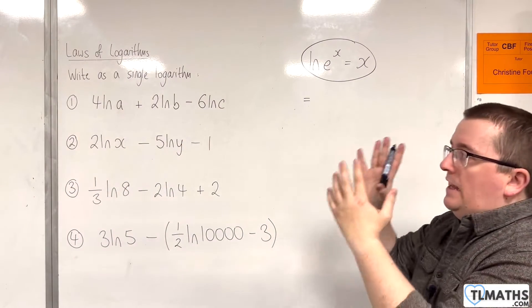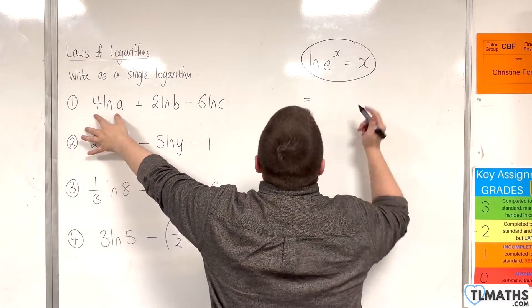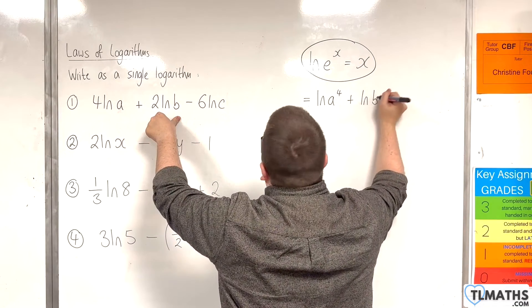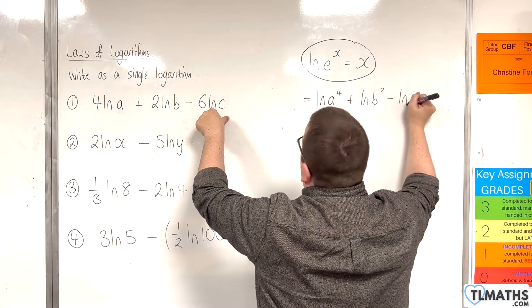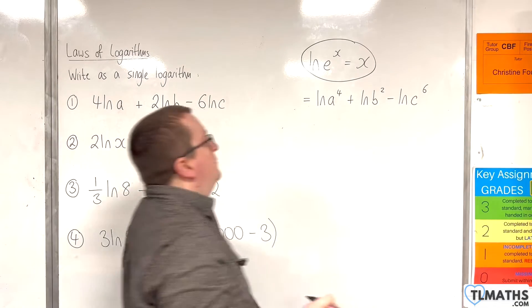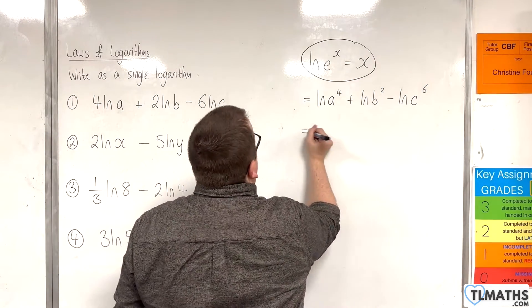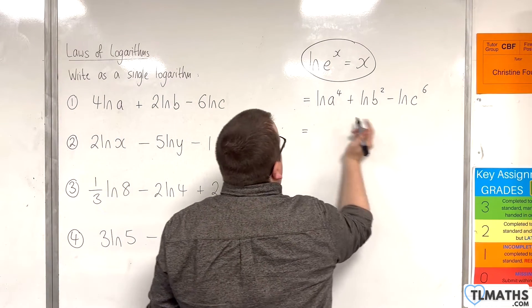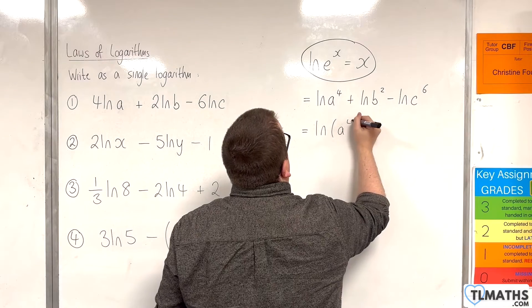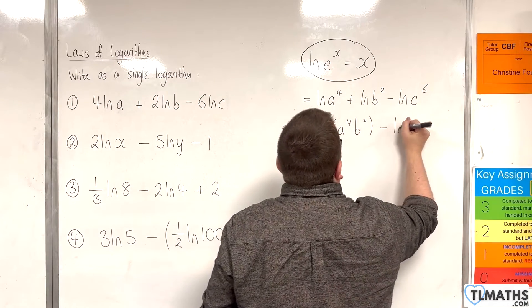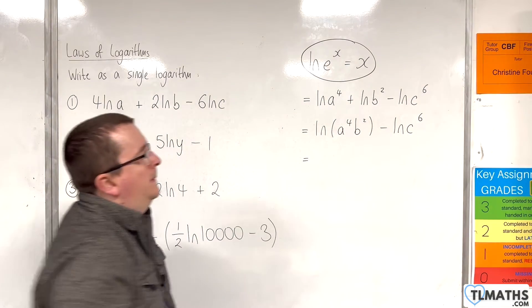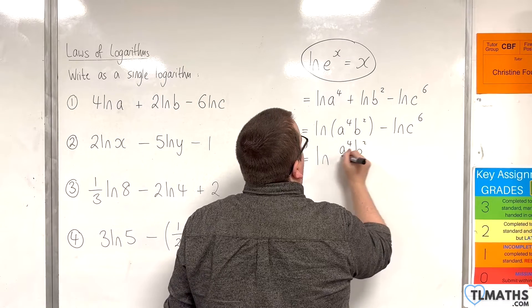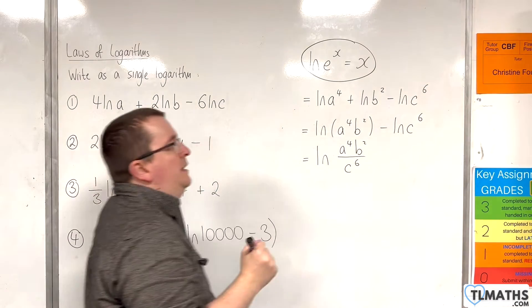The first thing you want to do is use the power rule, so we write this as the natural log of a to the 4, plus the natural log of b squared, take away the natural log of c to the 6. Then, ignoring the final term, we use the product rule on the first two — working from left to right — to get the natural log of a to the 4 times b squared, take away the natural log of c to the 6. Applying the quotient rule gives the natural log of a to the 4 b squared divided by c to the 6.